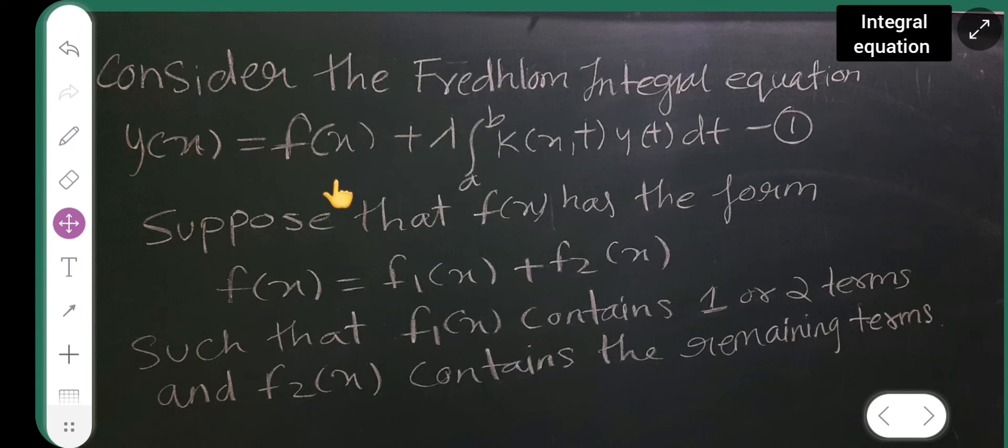So, suppose that F of X has the form this. If this F of X is in the form of F of X equals F1 of X plus F2 of X. Such that F1 of X contains 1 or 2 terms and F2 of X contains the remaining terms.